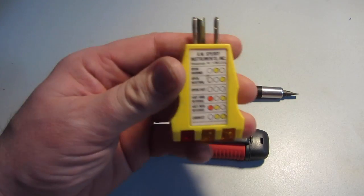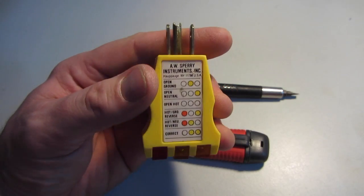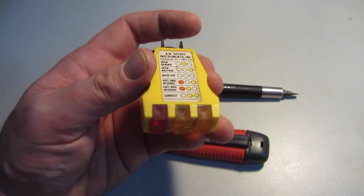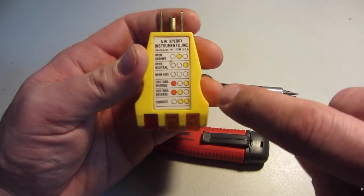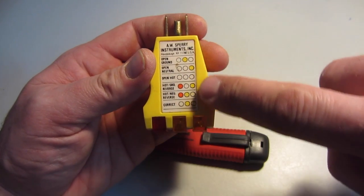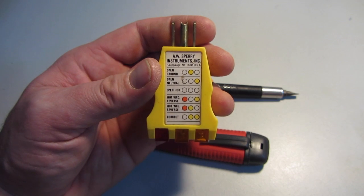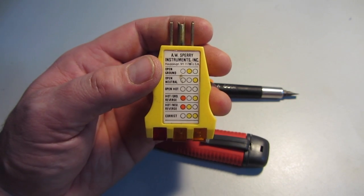An optional tool would be this plug tester, also called an outlet tester. There's some lights on the end, and as they light up you follow the code, and it can help you troubleshoot whether you hooked something up correctly or not.